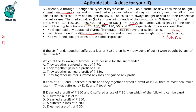Now in this question we cannot find the answer directly. We have conditions given as 'if' clauses, and based on those conditions we will figure out which coin is purchased by which person.